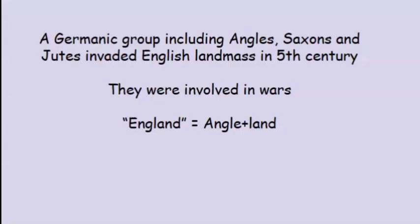In the fifth century onward, a Germanic group including mainly Angles, Saxons, and Jutes invaded the landmass which is our England today. There was a mixed population of many Germanic tribes and the original Britons, and there was less harmony between them. As a result, the whole population was involved in wars, and the Angles were the most dominant and ruling party of old Britain. This is why some scholars believe that the name England is actually derived from 'Angle Land.'